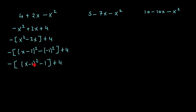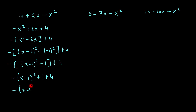So basically multiply everything within the bracket by minus 1. So that would give me x minus 1 all squared. That minus times that minus will give me a plus 1 plus 4. And this would give me x minus 1 all squared plus 5. And that would be my final answer.